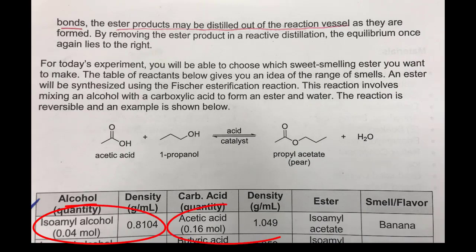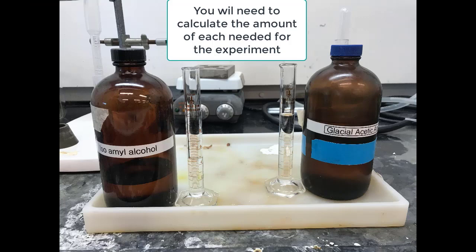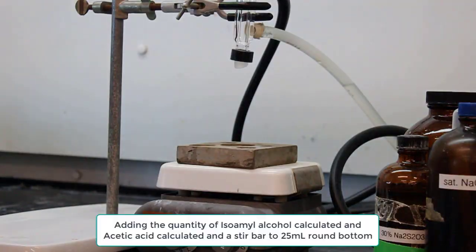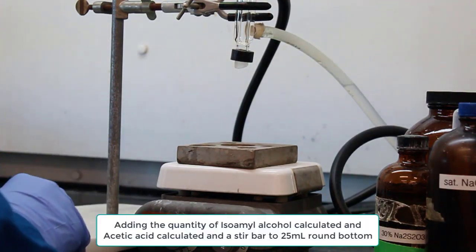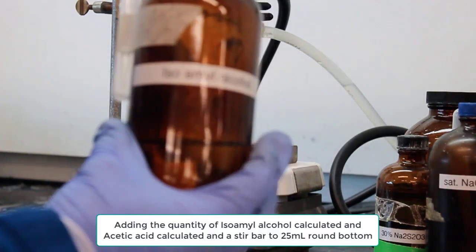First up, you can see here circled the amount of moles and density for our two reagents. You're going to need to calculate the volume that you see in these graduated cylinders for both the isoamyl and acetic acid reactants.